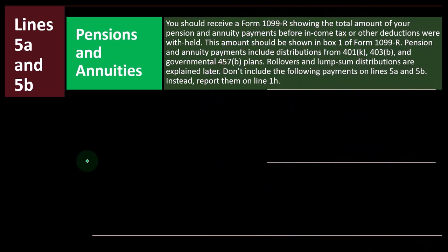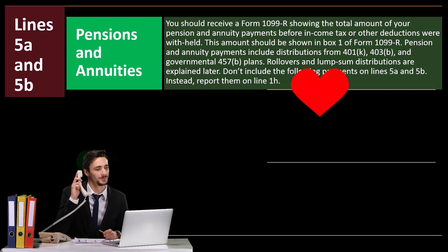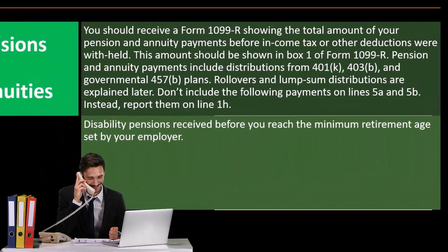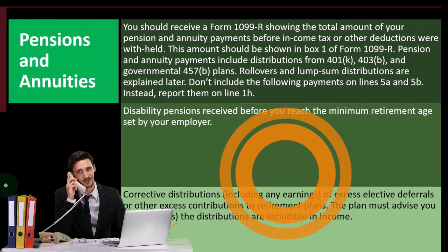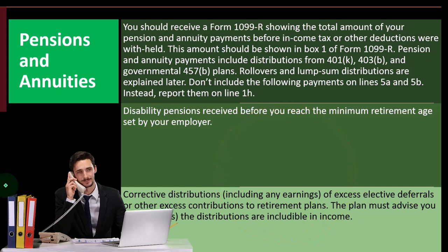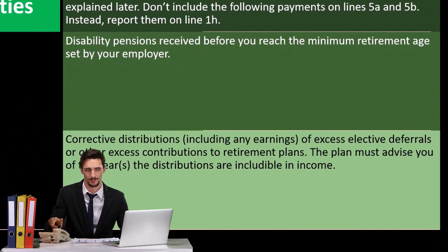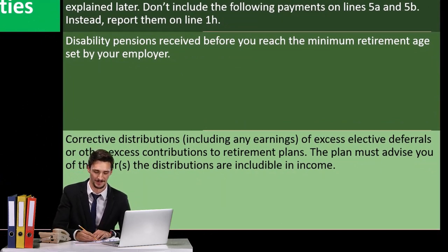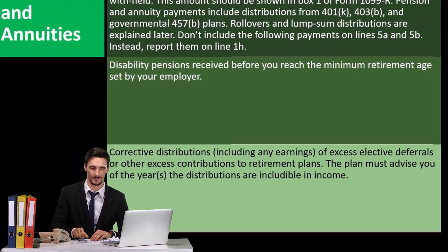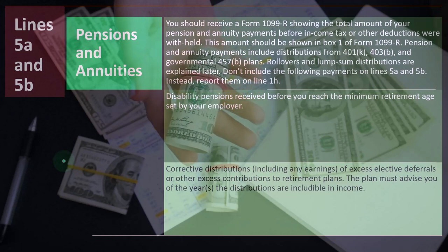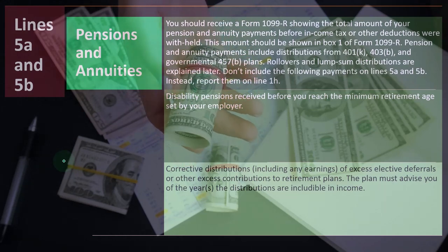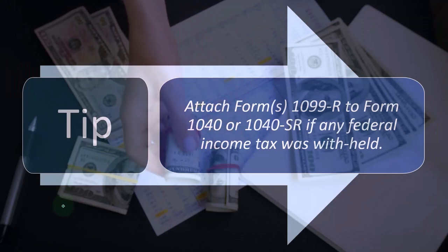Do not include the following payments on lines 5A and 5B. Instead, report them on line 1h: disability pension received before you reach the minimum retirement age set by your employer, and corrective distributions including any earnings of excess elective deferrals or other excess contributions to retirement plans. The plan must advise you of the years the distributions are includable in income, so it's important to allocate distributions to the correct year for proper income reporting.